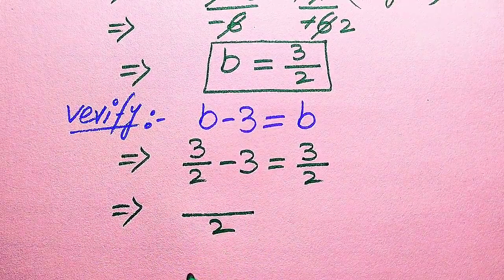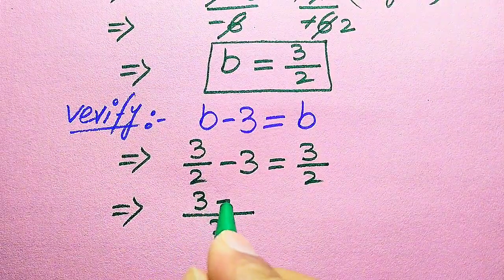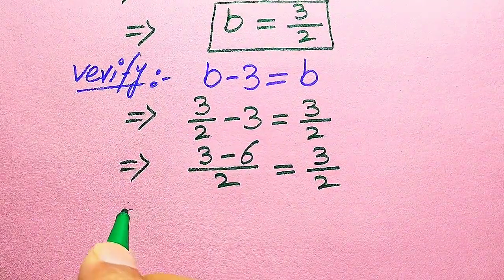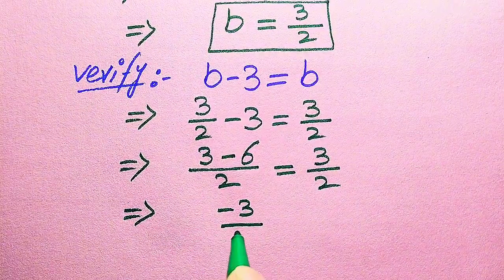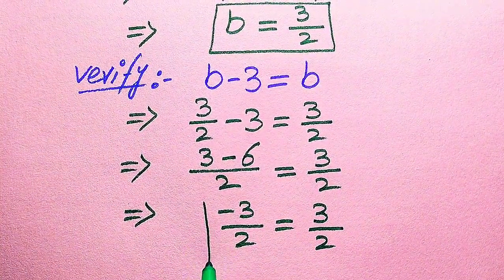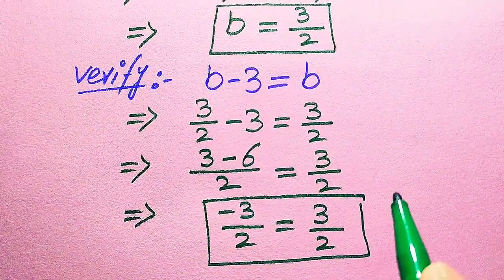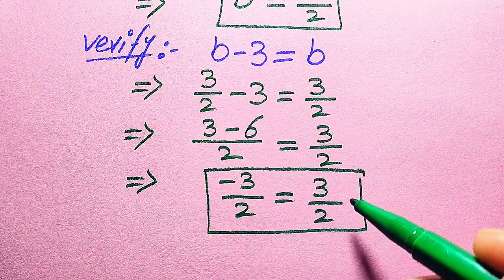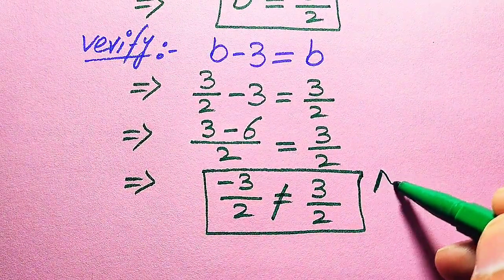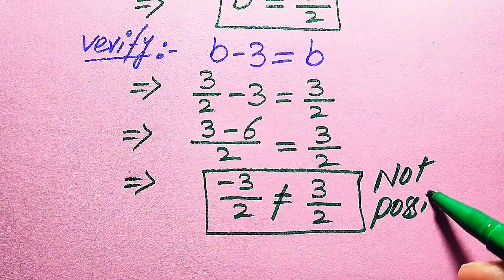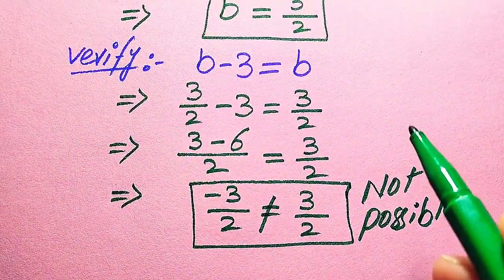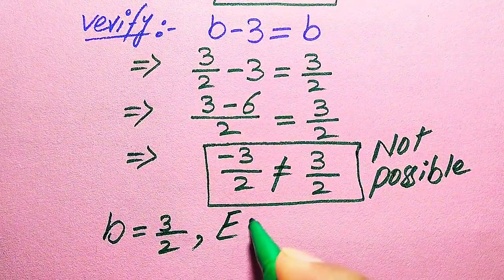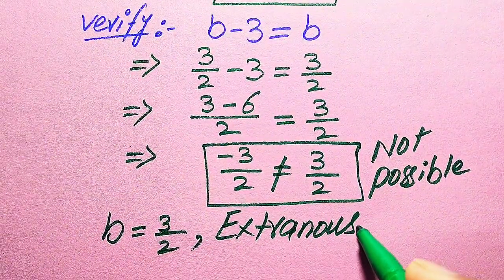Substituting: √(3/2 − 3) = 3/2. Taking the LCM on the left-hand side, the denominator is 2, giving √((3 − 6)/2) = 3/2, which is √(−3/2) = 3/2. So the left-hand side is −3/2 and the right-hand side is 3/2. These are not equal — it is not possible for a negative value to equal a positive value.